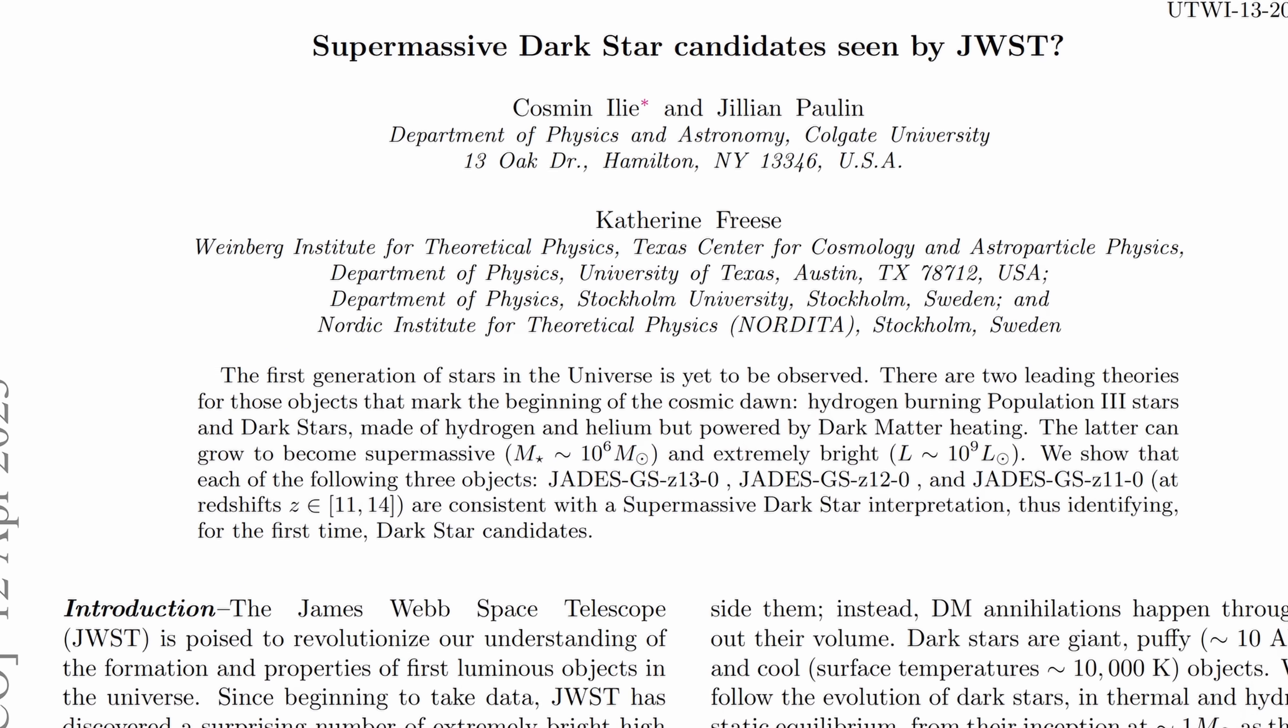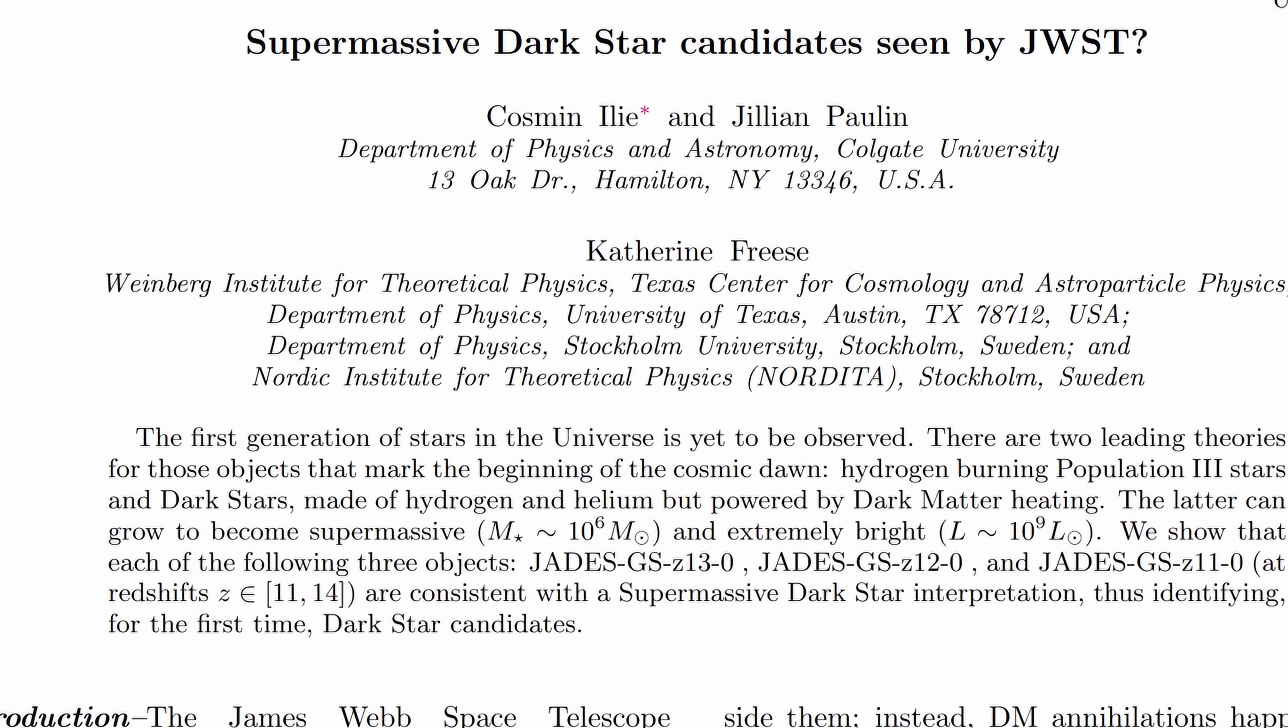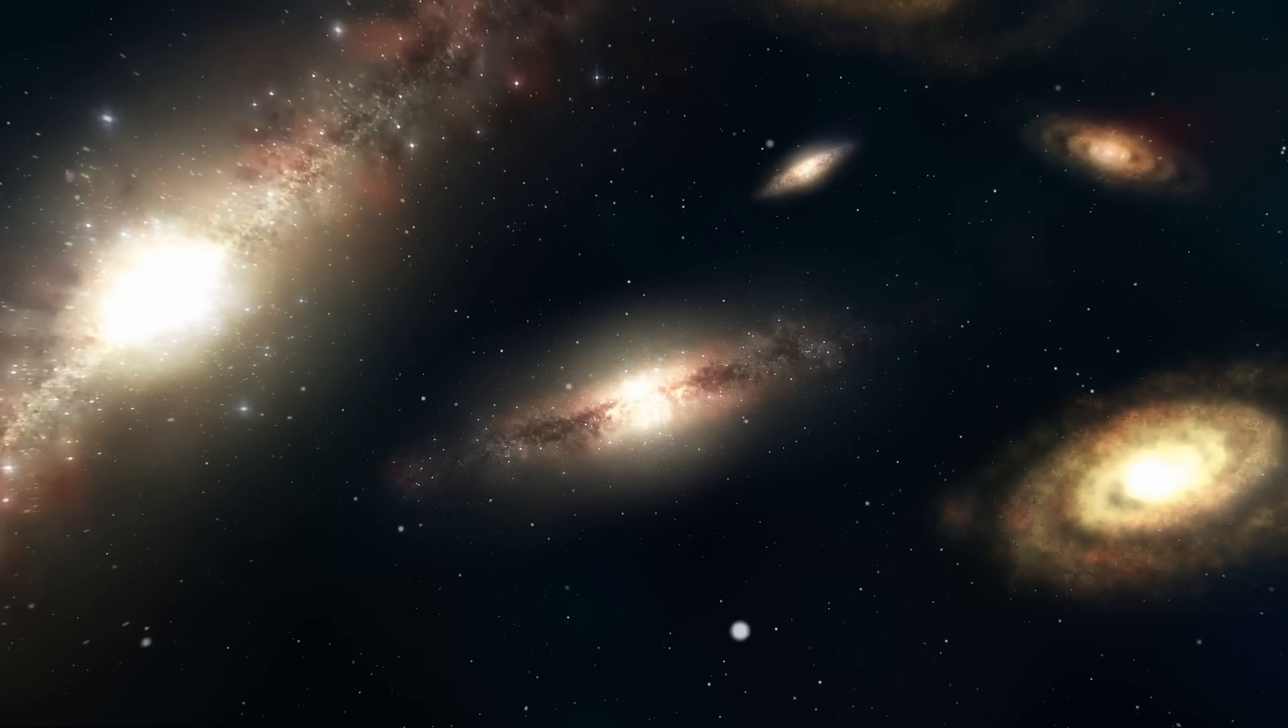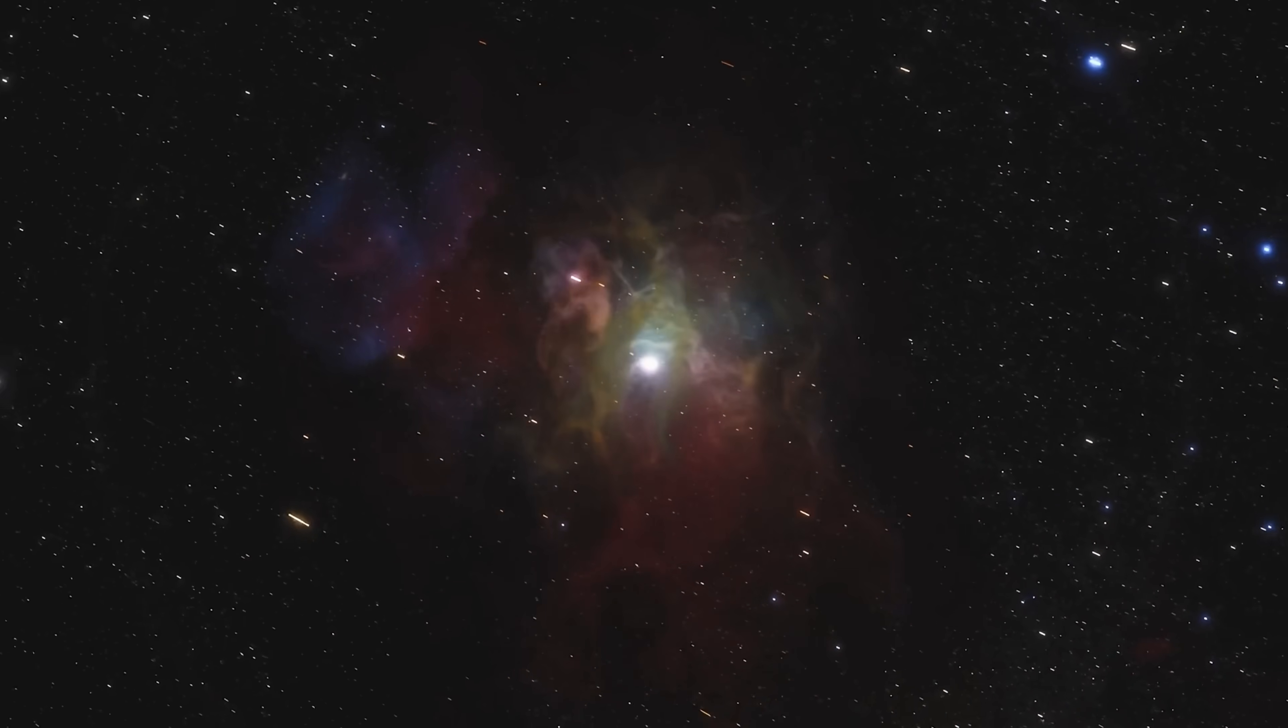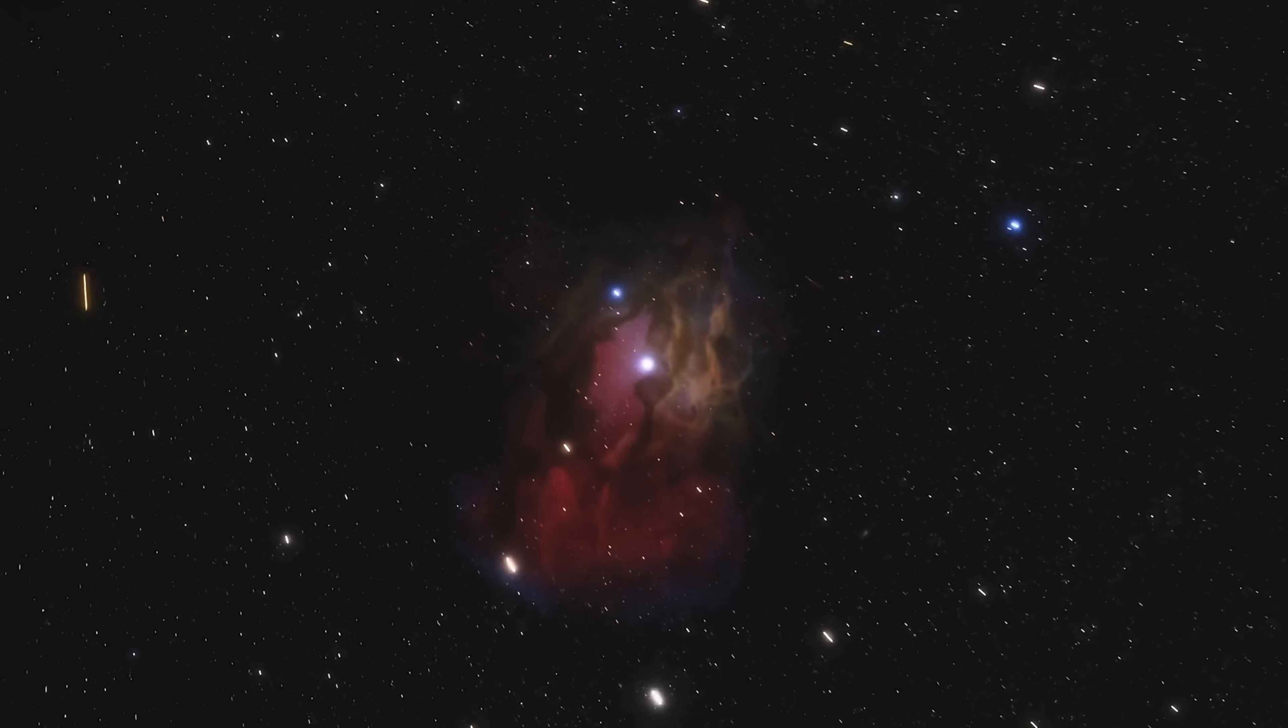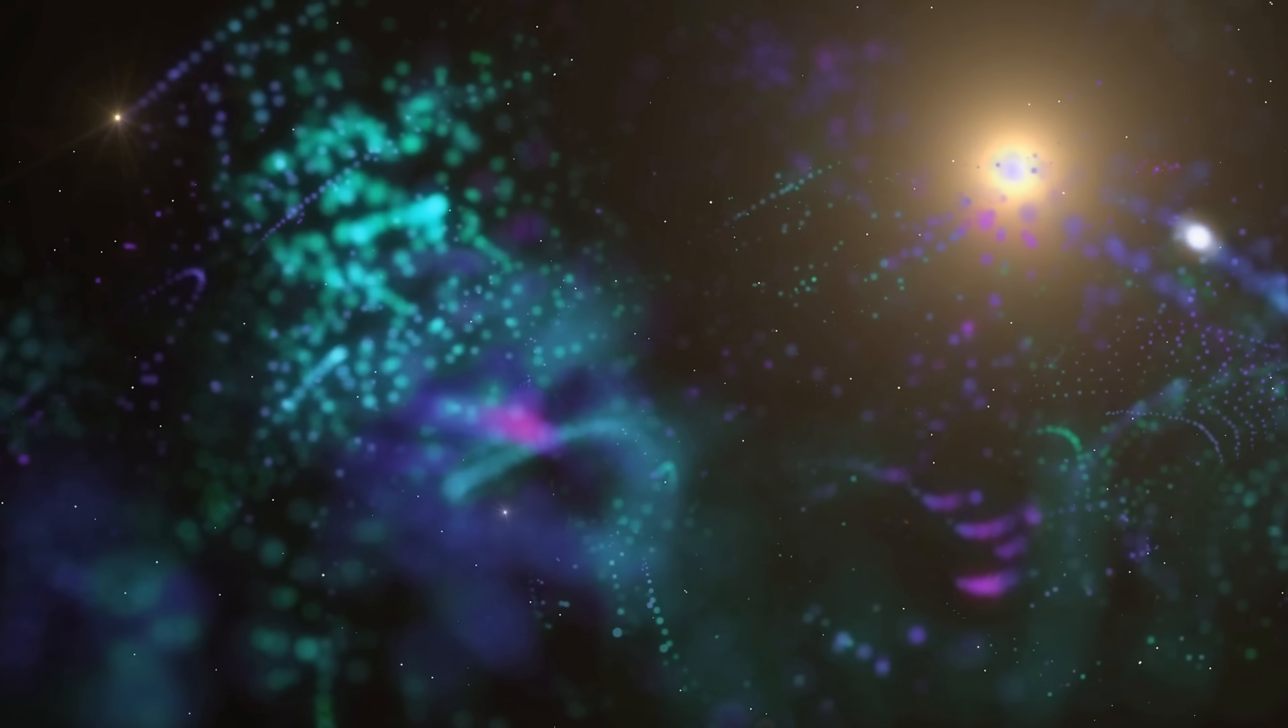Is there any chance that certain detections from the James Webb Space Telescope are not actually galaxies? Can they be something entirely different, in this case supermassive dark stars? Unusual objects that would combine dark matter and regular matter and would produce very specific effects visible from really far away, but also hypothetical objects that are not really far off from current explanations of modern physics.